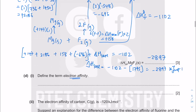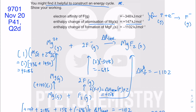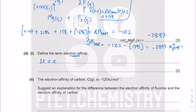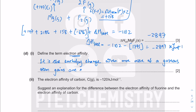The next topic is electron affinity. When one mole of gaseous atoms gains one mole of electrons to become one mole of gaseous ions with a single negative charge, that process has an enthalpy change called electron affinity. It is the enthalpy change when one mole of gaseous atoms gains one mole of electrons to form one mole of gaseous ions with a single negative charge.